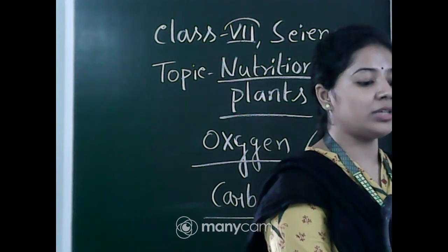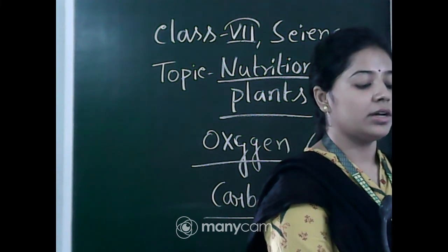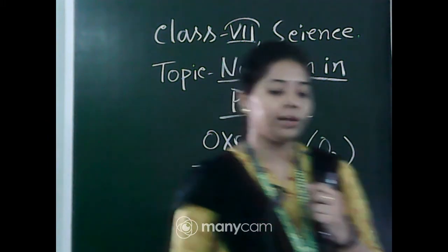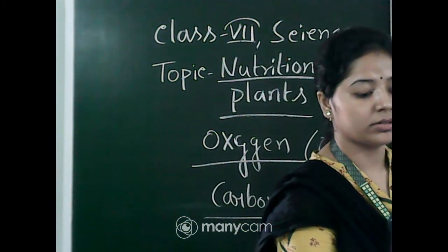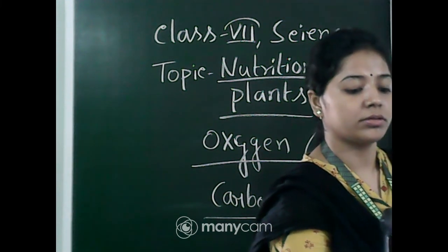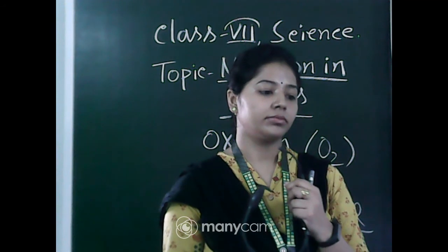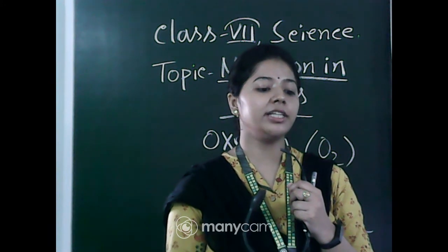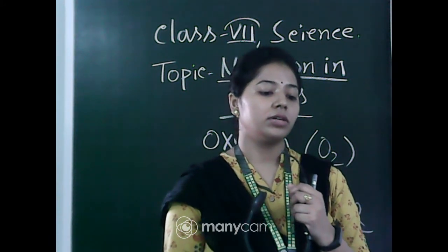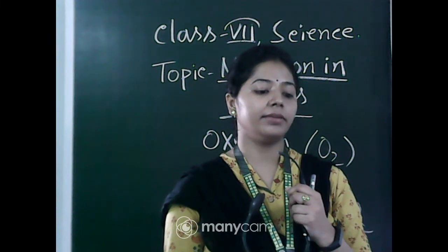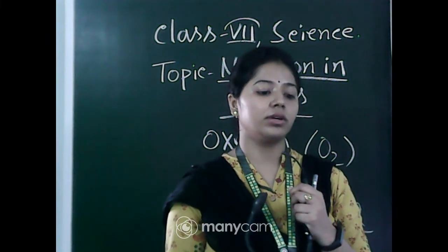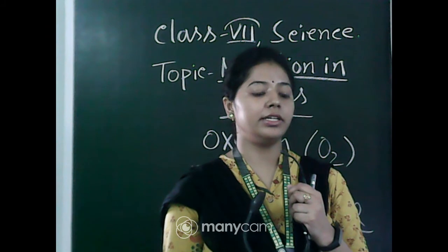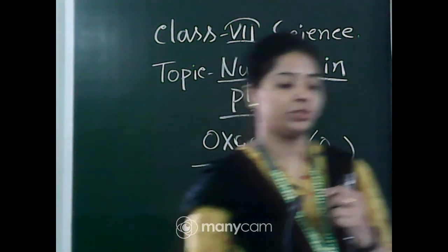Now the next question: Name one parasitic plant. The answer is Cuscuta or Amarbel. Only Cuscuta — that has to be the answer.